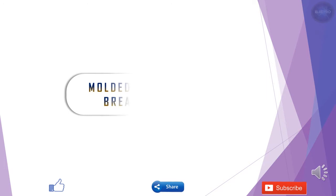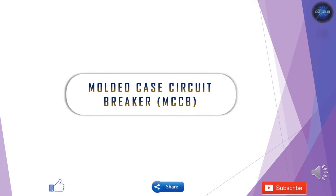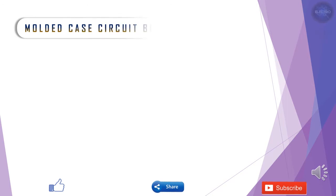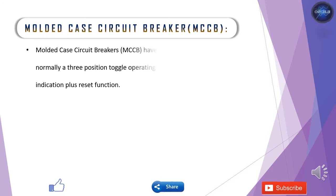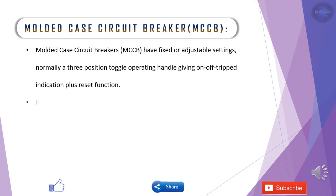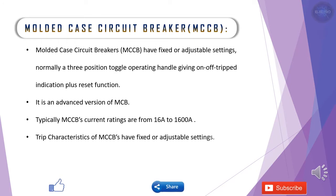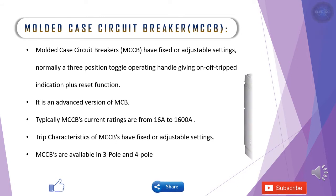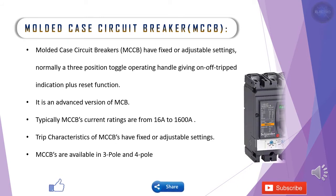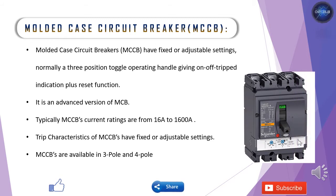Now we'll move to molded case circuit breakers — MCCBs. They normally have a three-position toggle operating handle giving on, off, and trip indication plus reset functions. This adjustable protection can be considered an advantage of the MCCB — you can tailor your output. The current ratings of MCCBs range from 16 amps to 1600 amps.